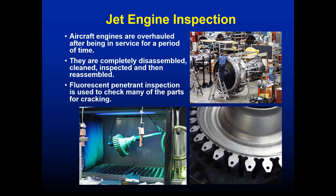Beyond the aircraft skin, jet engines must be inspected — they spin at tens of thousands of RPMs under massive dynamic loads. After a set number of service hours they are completely pulled apart and inspected top to bottom. They are mostly inspected using fluorescent penetrant inspection because surface cracking on components, axle and gearing systems, and fan blades of turbofan engines is the primary concern.